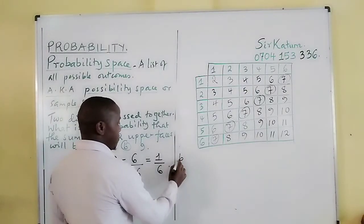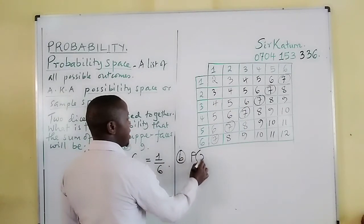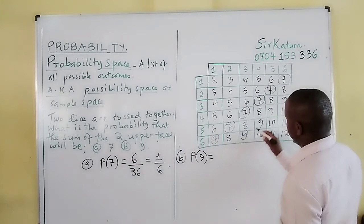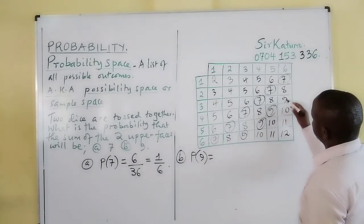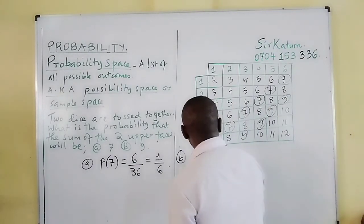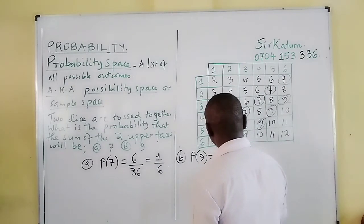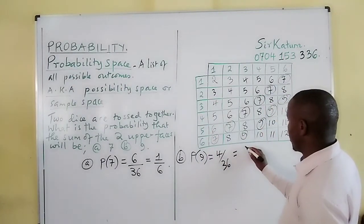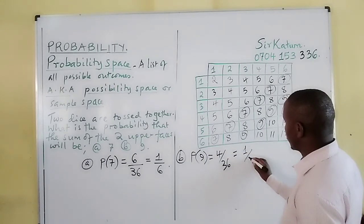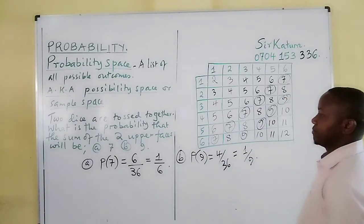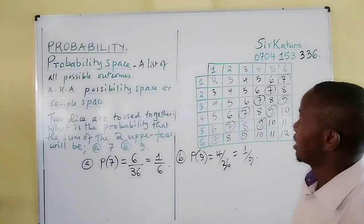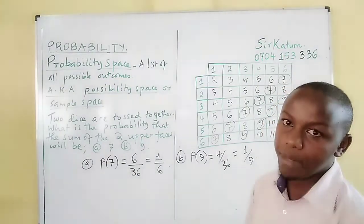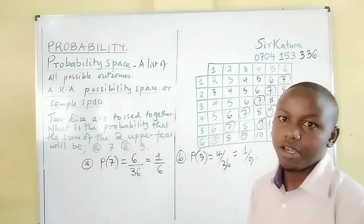For part b, the probability that the sum will be nine: we have four options out of thirty-six possible outcomes, and this gives us one out of nine. That is how we use probability space to calculate the probability of a required outcome.